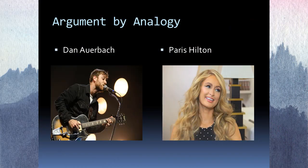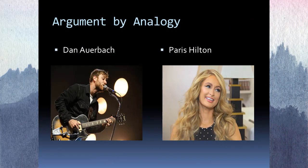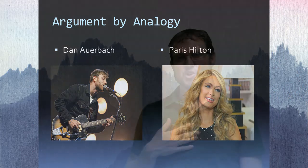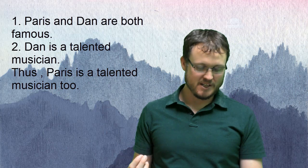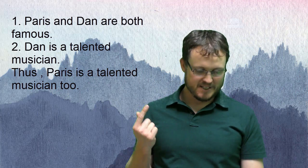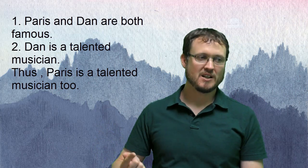Let's consider this example — Paris Hilton and Dan Auerbach, who is the guitarist of the Black Keys. An argument by analogy with these two might look like: Paris Hilton and Dan Auerbach are both famous; Dan is a talented musician; so Paris is a talented musician, too. Is this a strong or weak argument? First, can we compare two famous people? Sure — they're both people, both famous, no problem there.